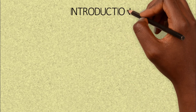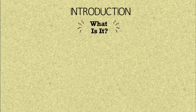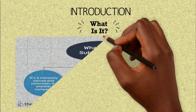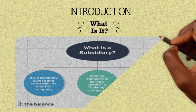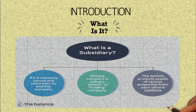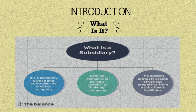The key question that may be coming to mind now is: what is a subsidiary? In simple terms, a subsidiary is a company owned and controlled by another company. The owning company is called the parent company or holding company, and the system protects assets of various properties from each other's liabilities. As a civil society organization, you can decide to create a for-profit company.